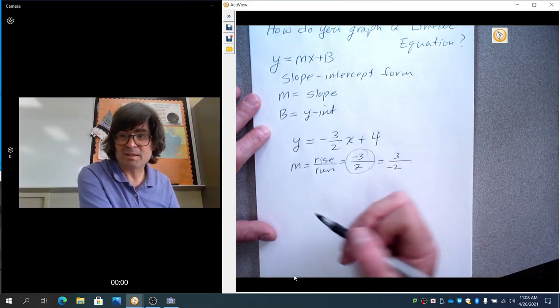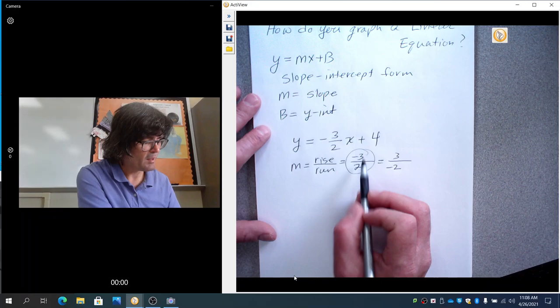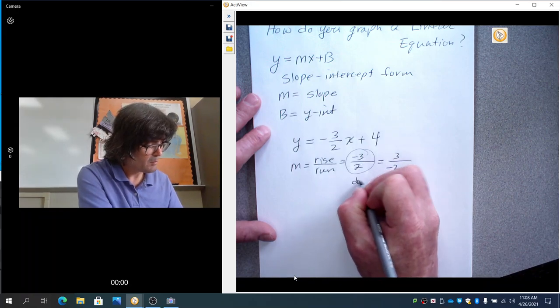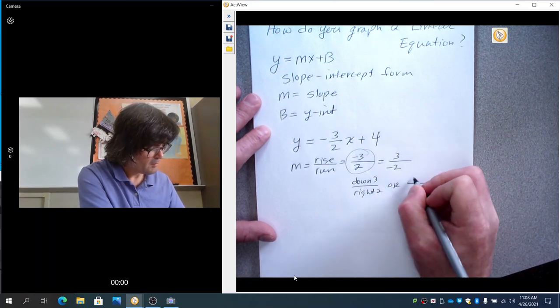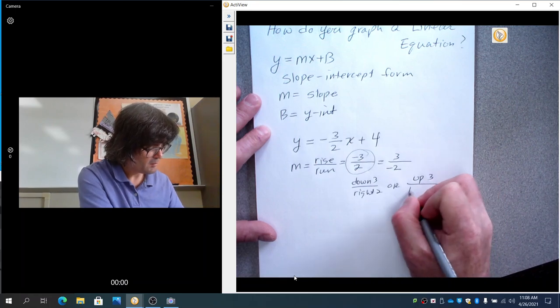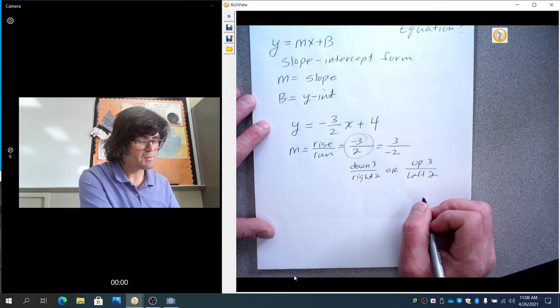I tend to like to put the negative on top, but this is down 3, right 2, down 3, right 2, or up 3 and left 2. Either one of those will work. So, it's your choice.